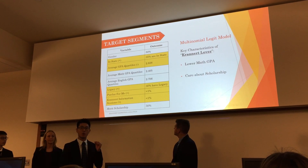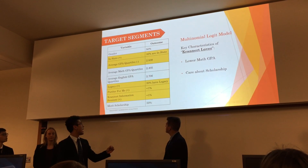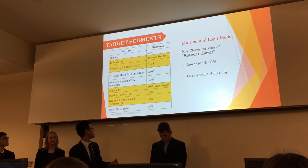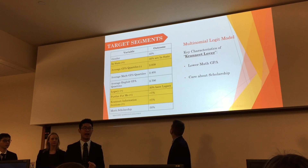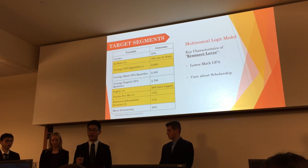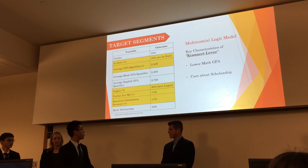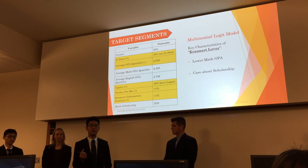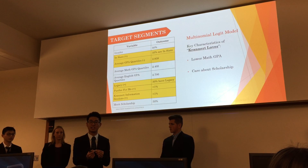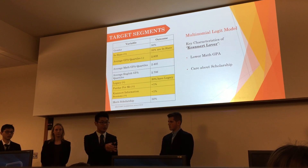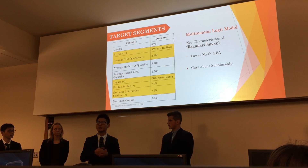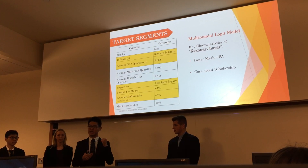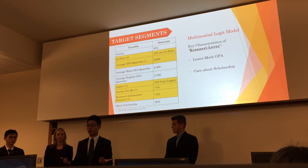30% of them have legacy. Less than 1% attended Purdue for Me and the Krannert information session. 50% did receive a merit scholarship. The highlighted items are statistically significant. For example, Purdue for Me has a positive sign, meaning that a student who attends Purdue for Me will have a positive impact on the likelihood of coming to Krannert. I then put all these variables into a logit model to predict whether a student with these characteristics will come to Krannert or not.